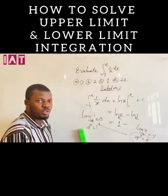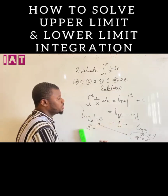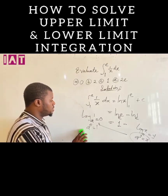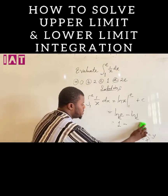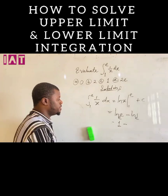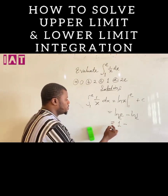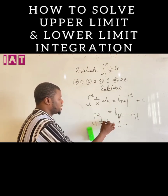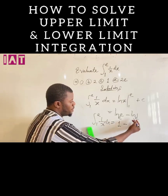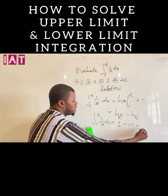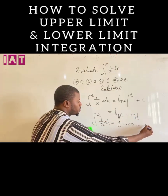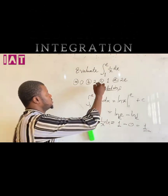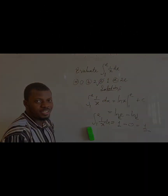The logarithm of 1 to any base is 0. So we have 1 minus 0, which gives us 1. The answer is 1, which is option C. Thank you very much.